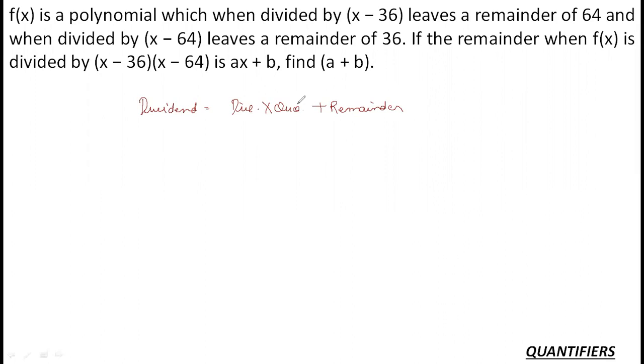If I use this here, I know there is a polynomial f(x). When f(x) is divided by x-36 there will be a quotient and the remainder comes out to be 64. So f(x) is the dividend, divisor is x-36, there is some quotient q1 and it leaves a remainder of 64. Now for the second statement, when divided by x-64, there will be a different quotient obviously, x-64 into q2 plus remainder will be 36.